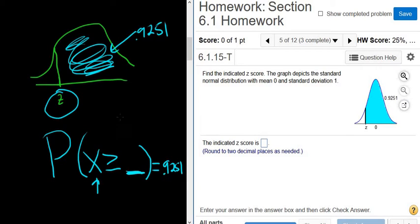So we're working backwards. Whenever it's shaded to the right, you pick greater than or equal to, and then we're given the area. So what we do is we go to StatCrunch.